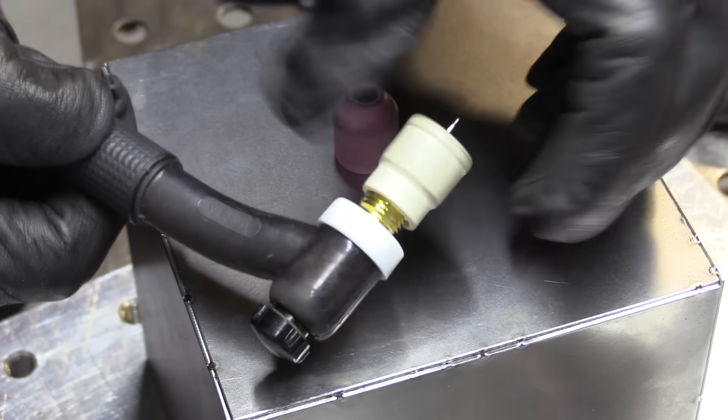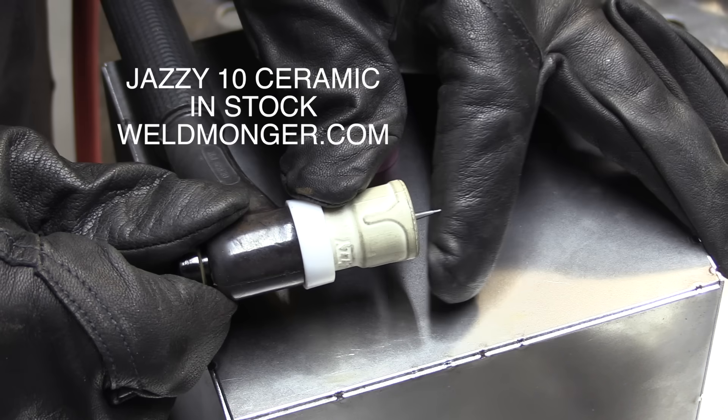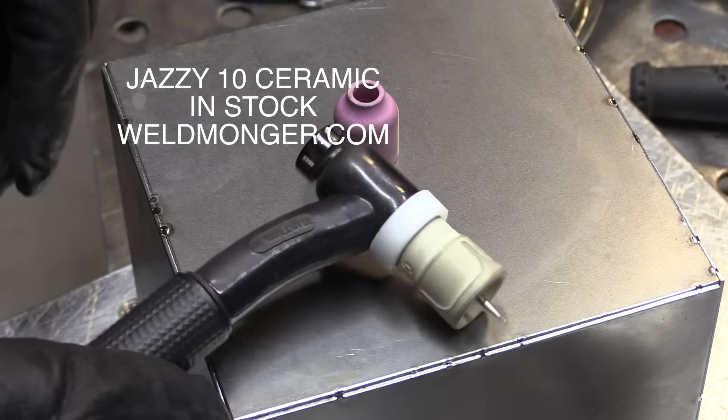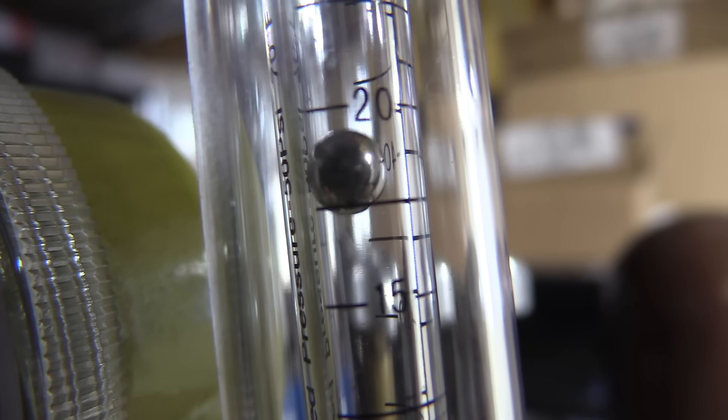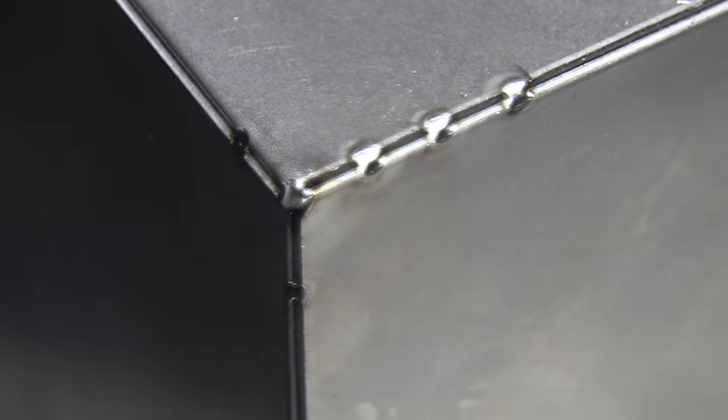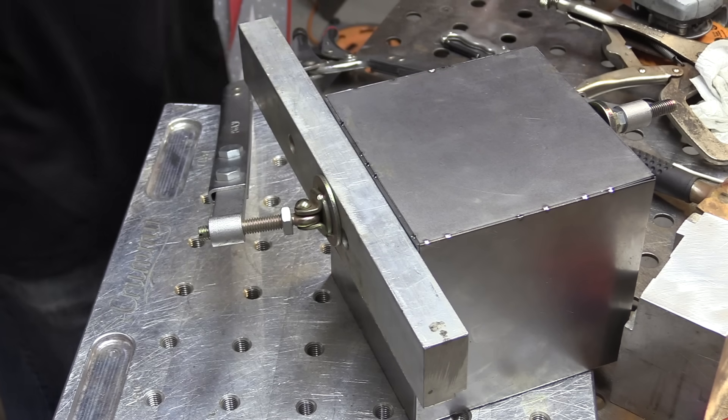Now I'm going to switch over to a Jazzy 10 ceramic. It's a number 10 cup with the extra couple of diffusers in there that makes a heck of a difference when it comes to shielding. I'm going to use about 20 CFH for this 10 cup and that's about what I would use for a number 8 gas lens. So it doesn't require any more gas than a number 8.